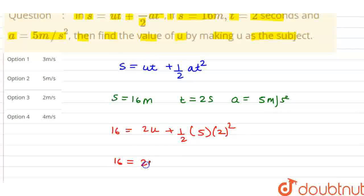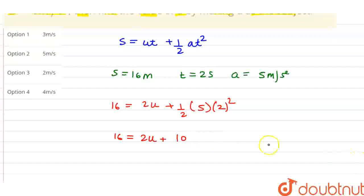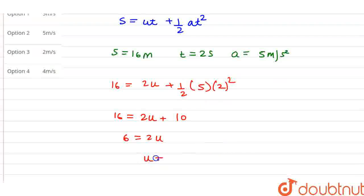So 16 = 2u. Now 2 squared is 4, and 4 into 5 is 20. 20 divided by 2 is 10, so here we will save 10. Now we will update 10 here. So 6 = 2u, and the value of u is equal to 3.